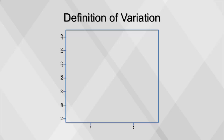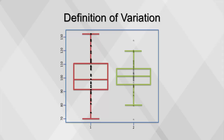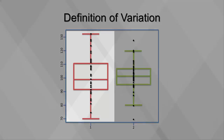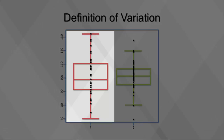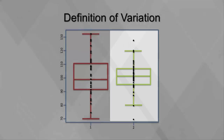Variation refers to how spread out the values are for a variable. Interpreting variation — that is, explaining a variable's variation in reference to other variables — is a foundational task in business analytics. Variables with values that are spread out have higher variation, while variables with values very close to the mean have lower variation.